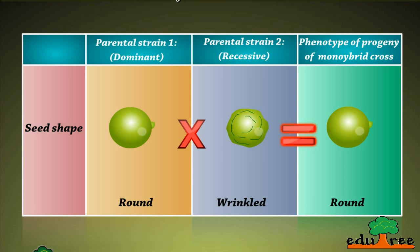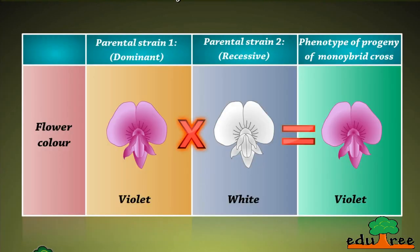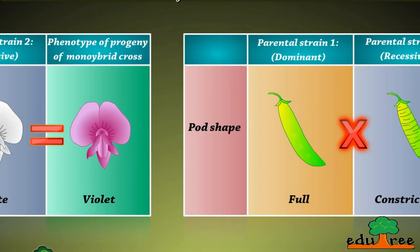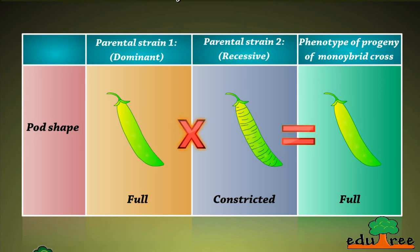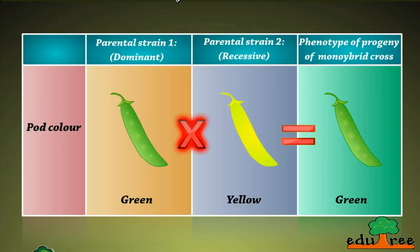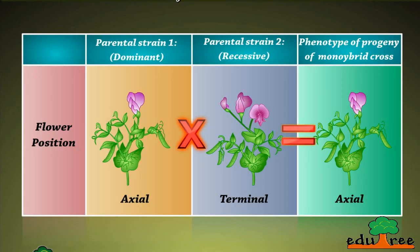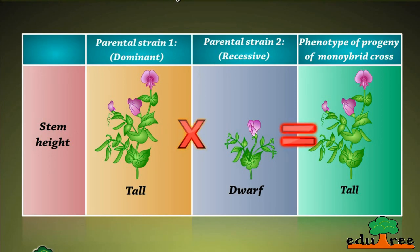Seed shape — round and wrinkled; for F1 progeny, round seed was dominant. Seed color — yellow and green; for F1 progeny, yellow pea was dominant. Flower color — violet and white; for F1 progeny, violet flower was dominant. Pod shape — full and constricted; for F1 progeny, full was dominant. Pod color — green and yellow; for F1 progeny, green was dominant. Flower position — axial and terminal; for F1 progeny, axial was dominant. Stem height — tall and dwarf; for F1 progeny, tall was dominant.